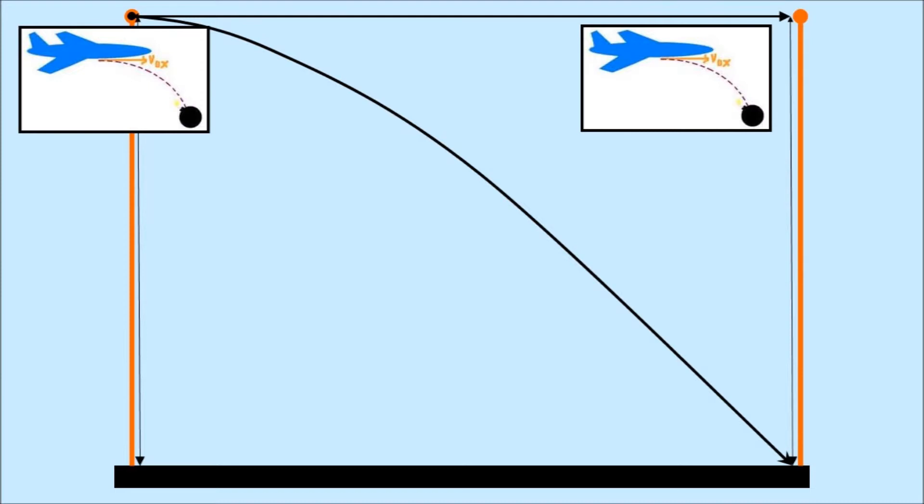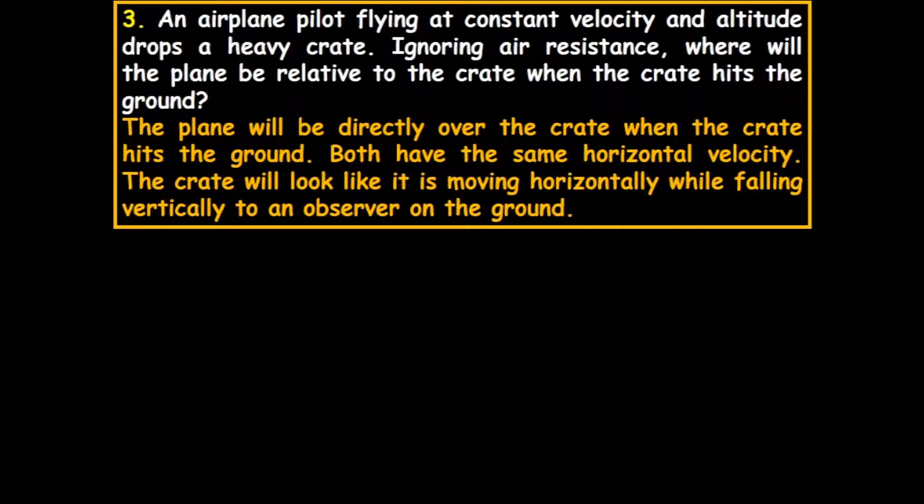However, air friction sometimes gets in the way of things. The plane will be directly over the crate when the crate hits the ground. Both have the same horizontal velocity. The crate will look like it is moving horizontally while falling vertically to an observer on the ground. There's a law called inertia, which we'll study that will help you understand that a little bit better.